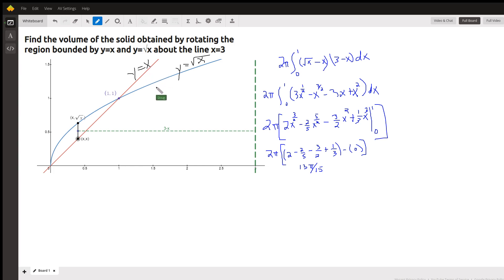You set those equal to each other to find the points of intersection. You'll find out 0, 0, and 1, 1 are where they intersect. So this region right here is the region bounded by those curves.